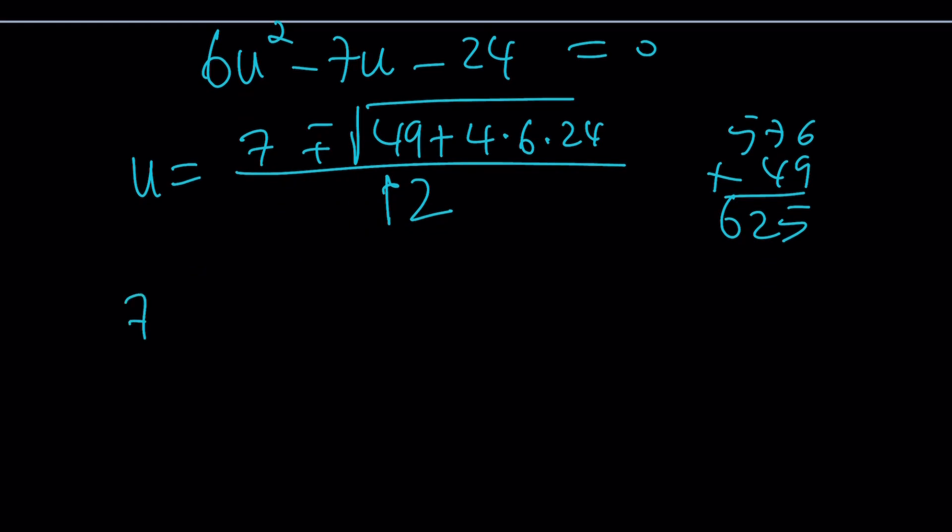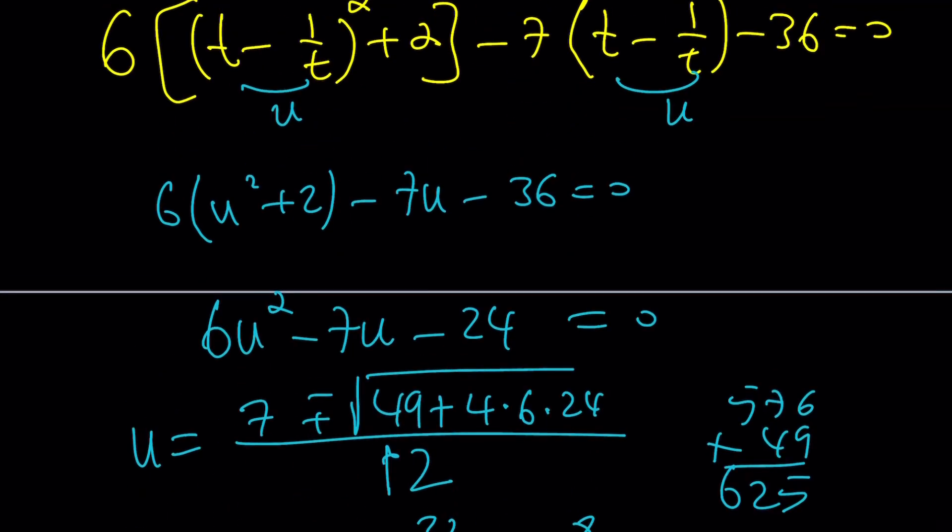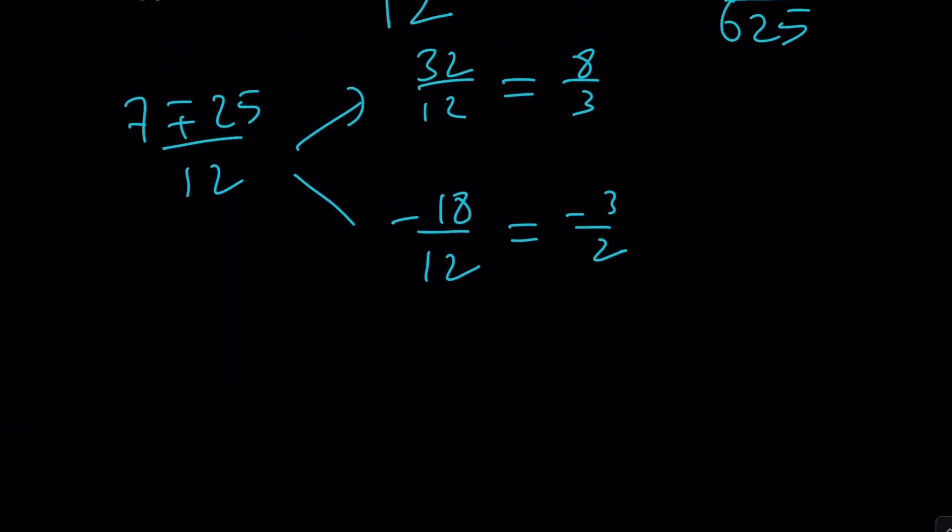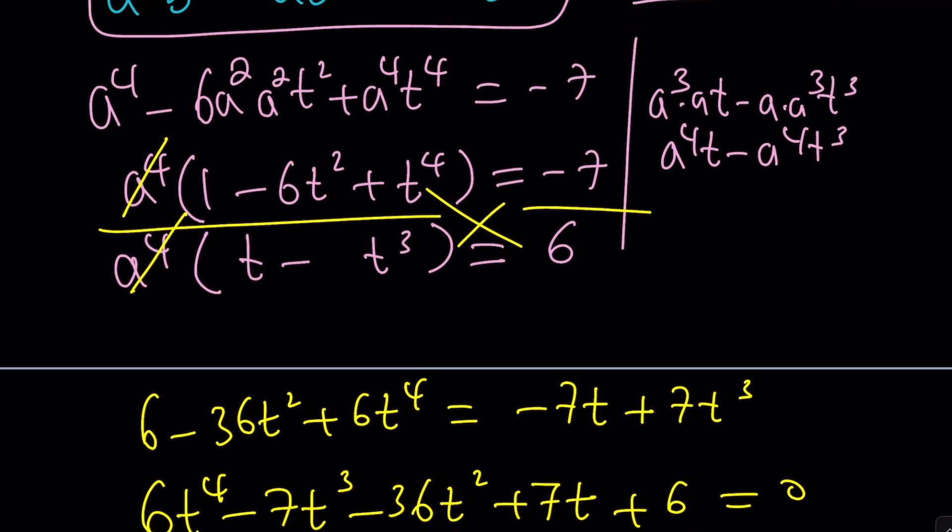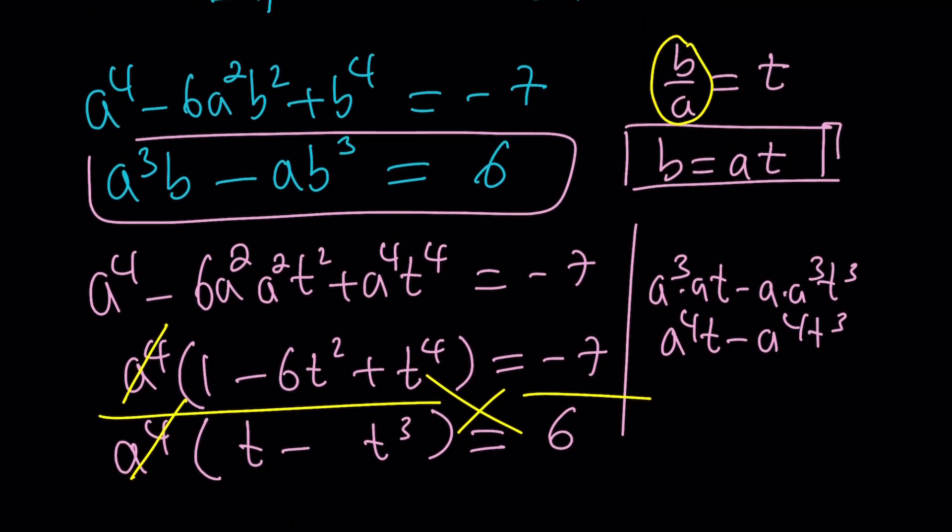So I'm going to be getting 7 plus minus 25 over 12. And that's going to be 32 over 12 or negative 18 over 12. And this is going to be divided by 4, 8 over 3, divide by 6, negative 3 over 2. These are the U values, remember? And U is T minus 1 over T. Now, you're going to set T is equal to T minus 1 over T. And then you're going to solve for T. But that's not the end of it because then you have to back substitute. What is T? T is B over A. That's going to give you B over A. And then you can plug this in once you know the value of T into one of these equations. That's going to give you the A and the B and so on. But that's going to be very painful, don't you think?